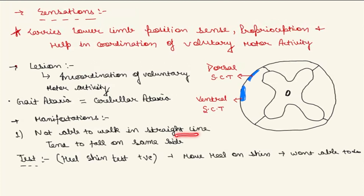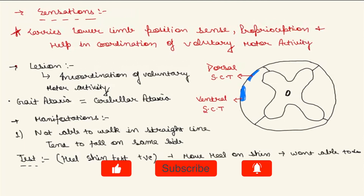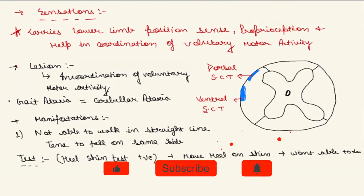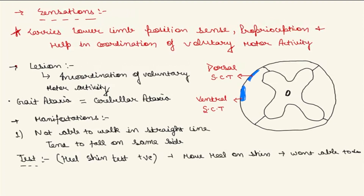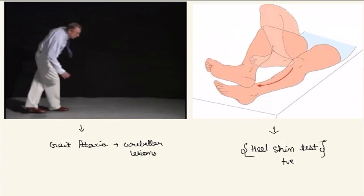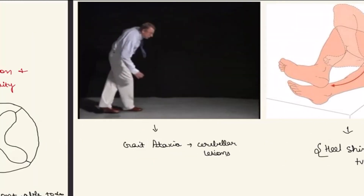The patient will not be able to walk in a straight line and will tend to fall on the same side as the lesion. For example, if the lesion is on the right side of the dorsal spinocerebellar tract, the patient tends to fall to the right. This is gait ataxia. A clinical test used by neurologists is the heel-shin test, where the patient is asked to move the heel along the shin of the other leg — if the tract is damaged, the movement is uncoordinated.